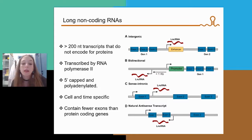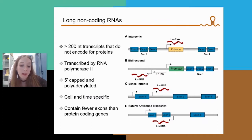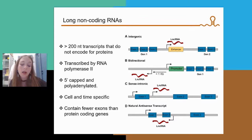Long non-coding RNAs are classified according to their relative position to protein-coding genes: intergenic, found between two protein-coding genes and usually in enhancer regions; bidirectional, mapped within one kb of promoter regions and transcribed in the opposite direction; sense intronic, transcribed in the same direction and from the same locus as a protein-coding gene; and natural antisense transcripts, transcribed from the opposite strand and overlapping with one or several exons or introns of the protein-coding gene.